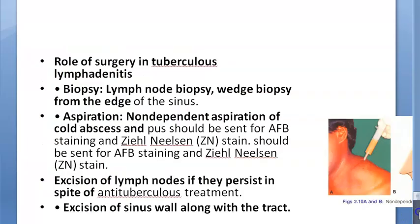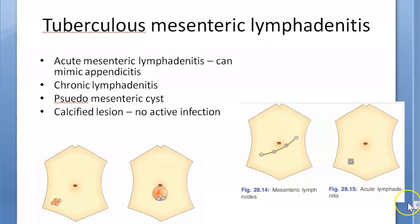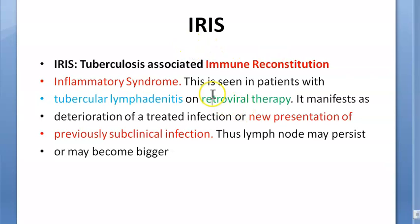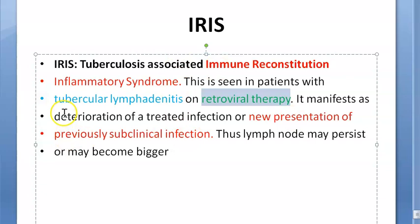There is also mesenteric lymphadenitis. Acute type can mimic appendicitis; chronic lymphadenitis in children may show failure to thrive. Pseudo-mesenteric cyst and calcified adhesions are also seen. If a person has AIDS or HIV and is on retroviral therapy, they can have immune reconstitution inflammatory syndrome (IRIS) — a subclinical infection which starts presenting because of antiretroviral therapy.